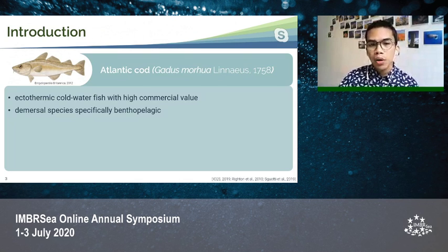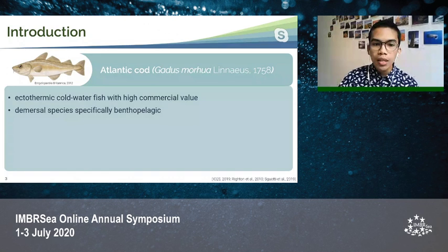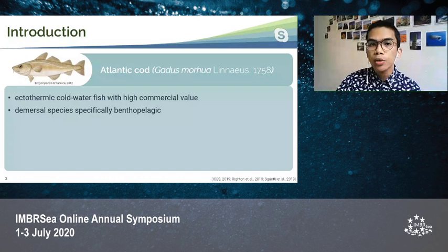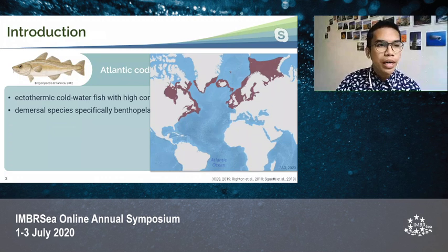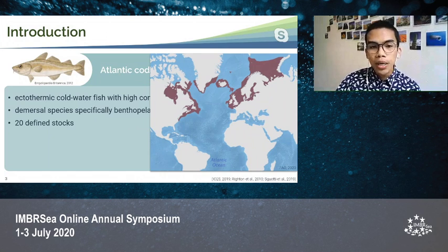It is an ectothermic cold-water fish with high commercial value. This species is demersal, especially benthopelagic, which means it swims just above the sea floor. Its distribution is found in the northern Atlantic, ranging from Northern America and Greenland until Northern Europe, and it has 20 defined stocks.